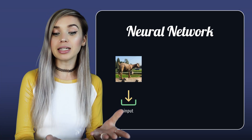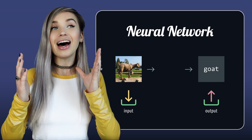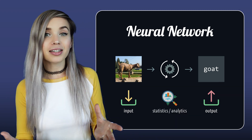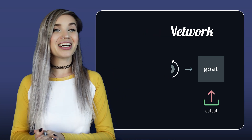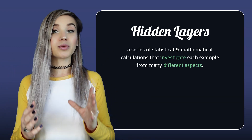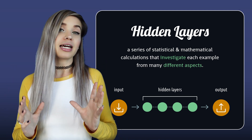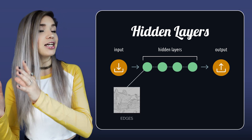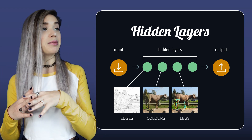But between the point where we feed an image to our neural network and the point where we reach the conclusion that it's a goat, a lot of different processes are happening in the background. These are a series of statistical calculations that investigate each of our examples from many different angles. These calculations happen inside something called hidden layers, which are located in between our input layer and our output layer, and they are responsible for evaluating different aspects of our examples. For example, one hidden layer is responsible for edge detection, another hidden layer maps the colors, another one counts the legs, or maybe even detects horns.